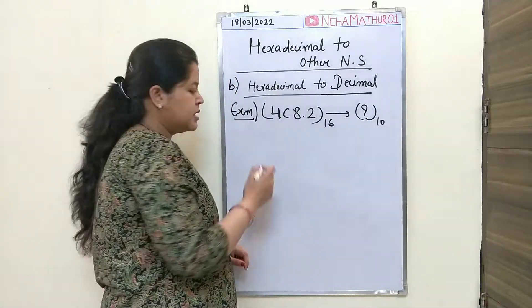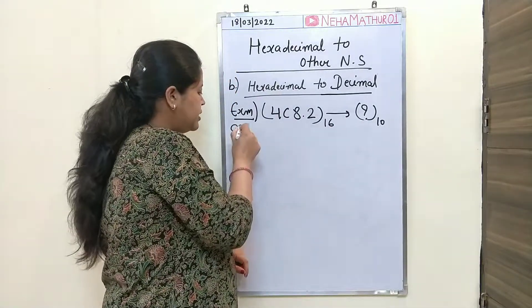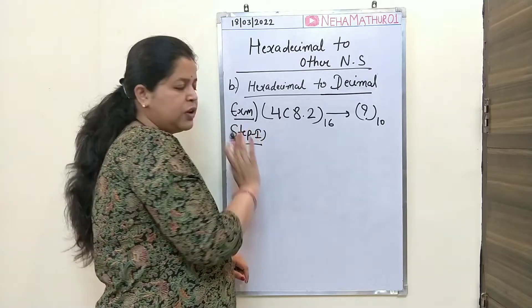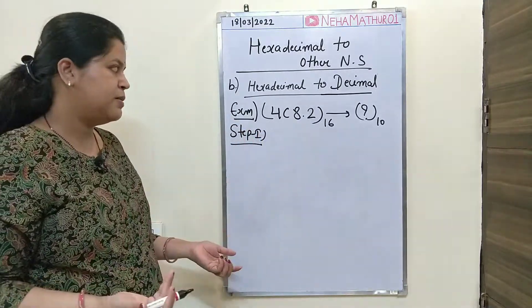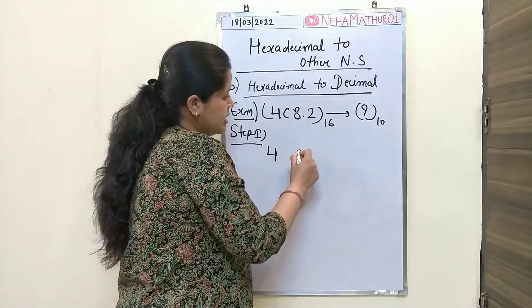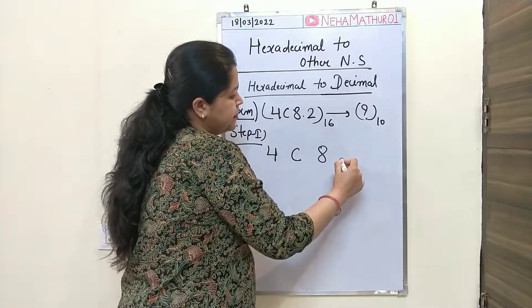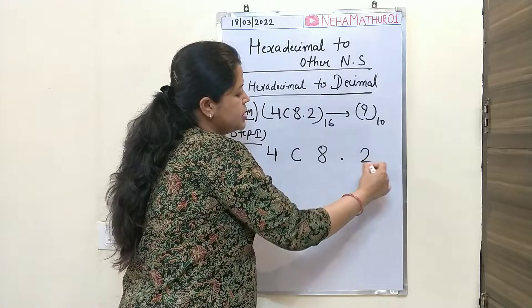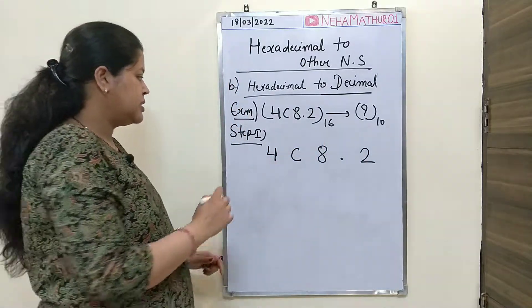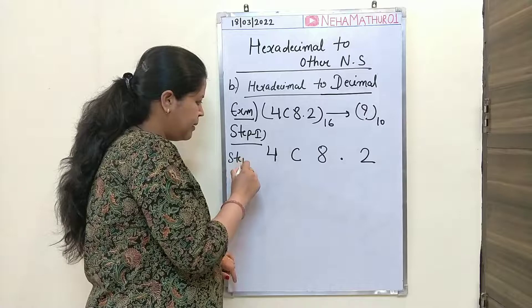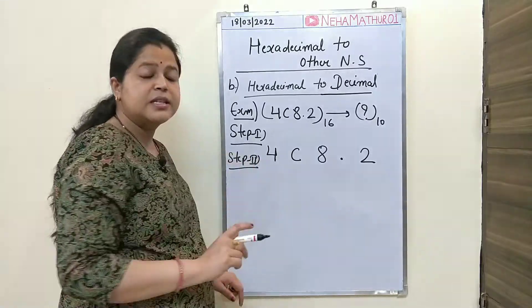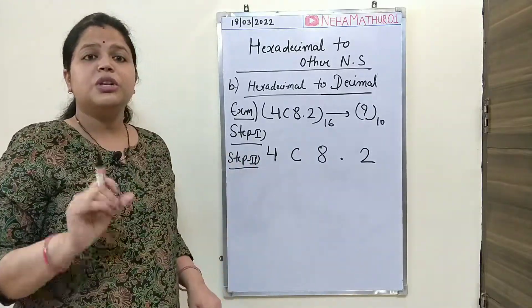Again we have some steps. Step 1: write down the given hexadecimal number properly. Step 2: in the second step, you will have to multiply each digit by its position weight. For hexadecimal number system, we have a positional weight of 16.